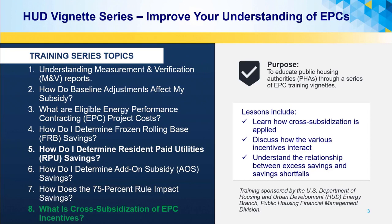The vignettes are designed for PHAs with an EPC. HUD wants to improve your overall understanding of energy performance contracts, specifically to identify eligible costs, calculate savings, and request EPC incentives on HUD forms 52722 and 52723 as part of your annual operating subsidy submission.